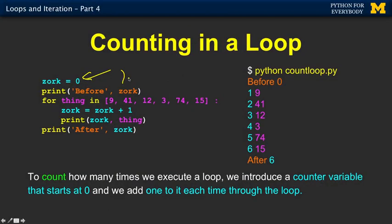Normally this would be called count, but I'm going to use a bad non-mnemonic variable called zork just so you don't get too used to it. So far how many have we seen? Well we've seen zero. And then the iteration variable 'thing' is going to be 9, 41, 12. Each time through the loop we're going to add one to zork. Increment is another word for this — zork equals zork plus one. We print out the thing we're looking at and we print out the current value for zork.